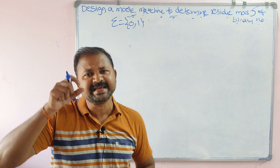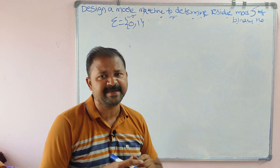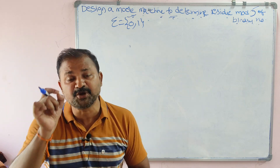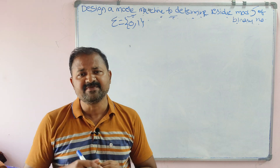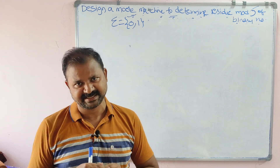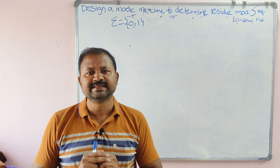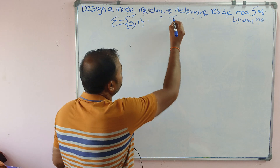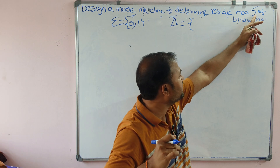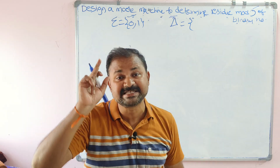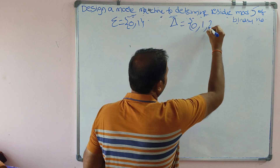If we divide any binary number by 5, residue mod 5 means remainder — the modulo operation. If we divide any binary number by 5, then we will get maximum 5 remainders. They are 0, 1, 2, 3, and 4. So the output alphabet triangle equals these 5 possible remainders: 0, 1, 2, 3, 4.